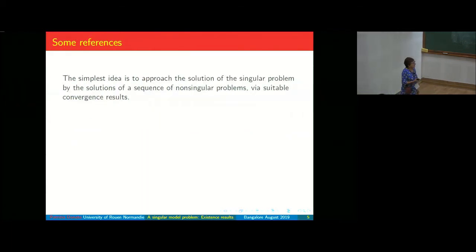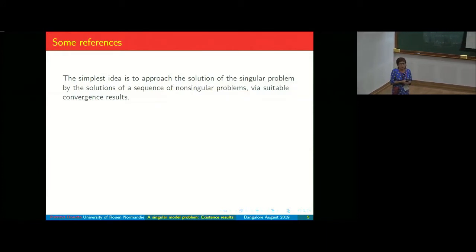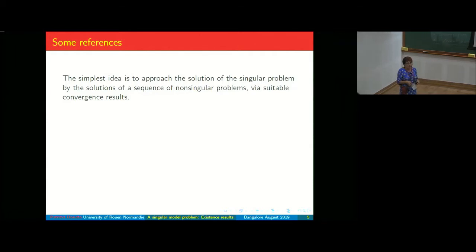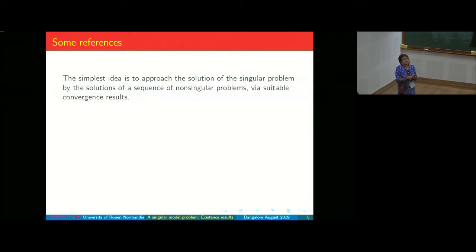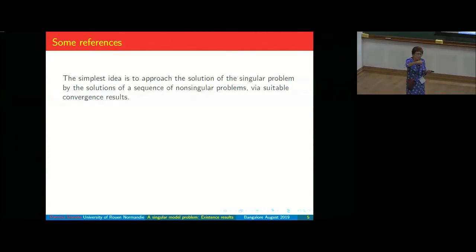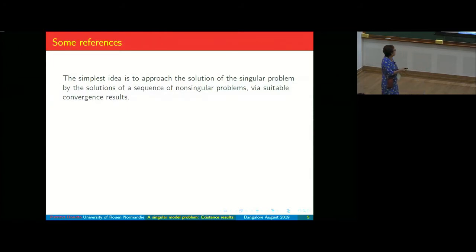What is done in the literature? The simplest idea to find the solution is to approximate your singular problem with another problem which is not singular, then show — as often in a linear problem — that the sequence of solutions of the approximating problems converges to a function which is a solution of your desired problem.